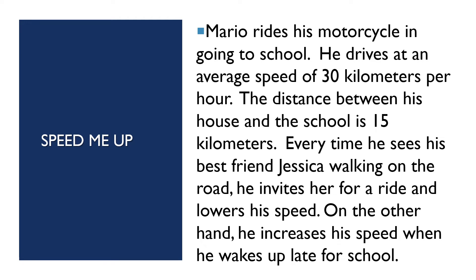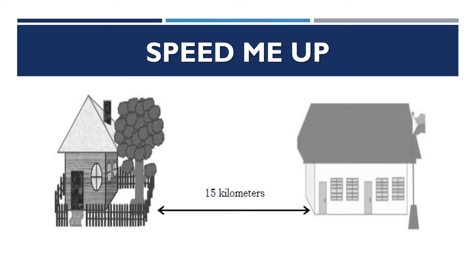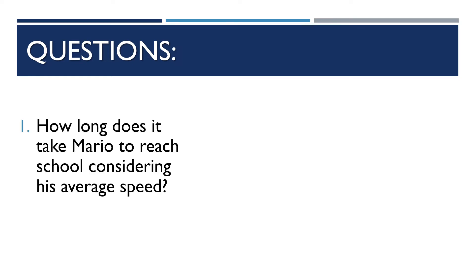Mario rides his motorcycle to school at an average speed of 30 kilometers per hour. The distance between his house and the school is 15 kilometers. He lowers his speed when he sees his friend Jessica, and increases his speed when he wakes up late. On the left side is Mario's house, 15 kilometers from school. Let's answer the following questions.